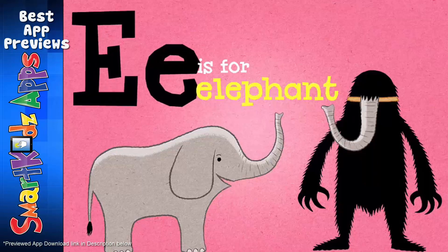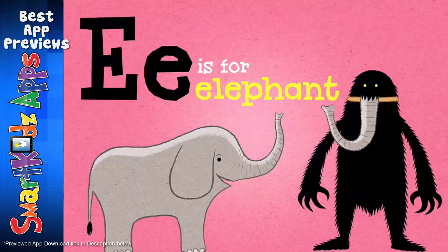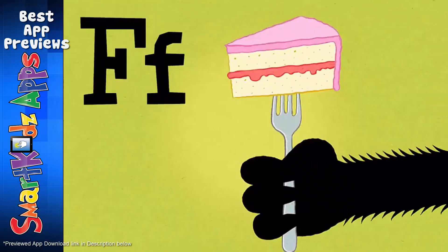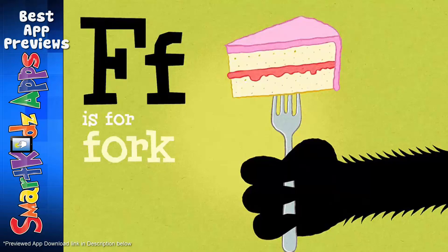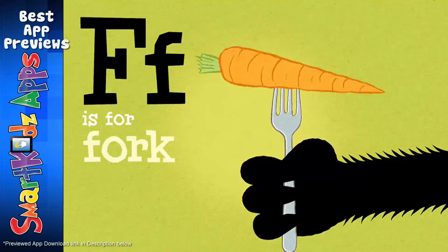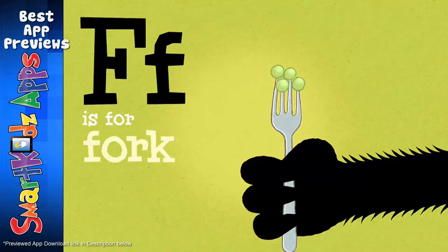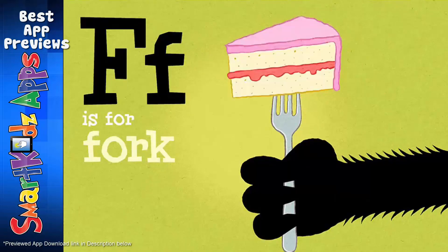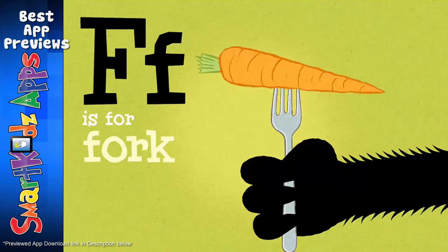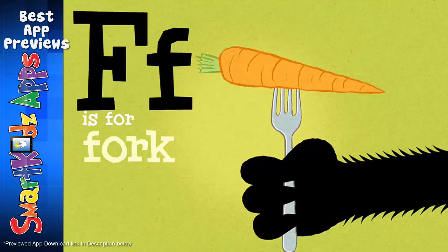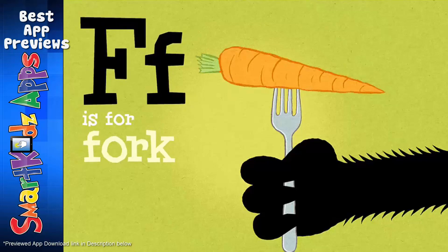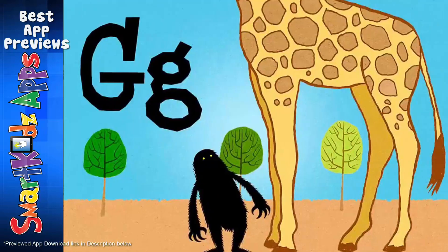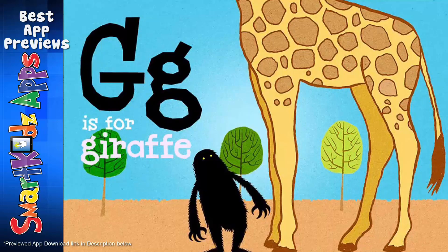E, ELEPHANT. F is for FORK. F, FORK. G is for GIRAFFE.